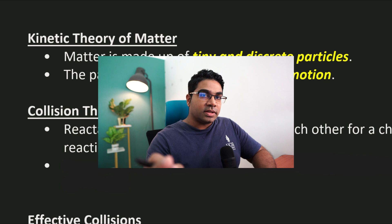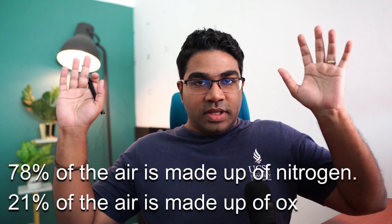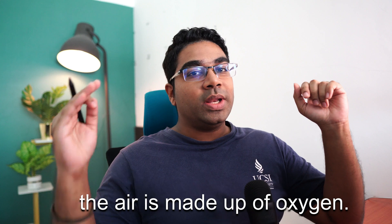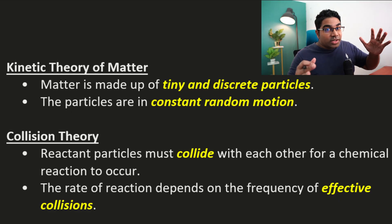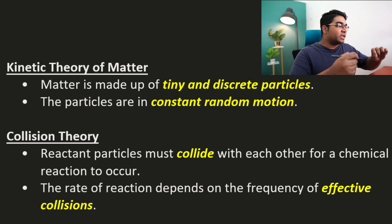However, consider this: 78% of the air is made from nitrogen and 21% is made from oxygen. So oxygen and nitrogen particles are bound to collide in the air. If each time they collide a reaction ensues and nitrogen oxide is formed, we would be depleted of oxygen and we would all suffocate. Obviously that's not the case, so there's something more here — and this is where effective collision comes into play.